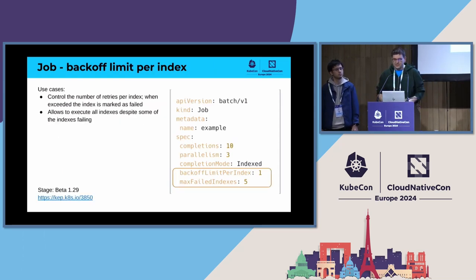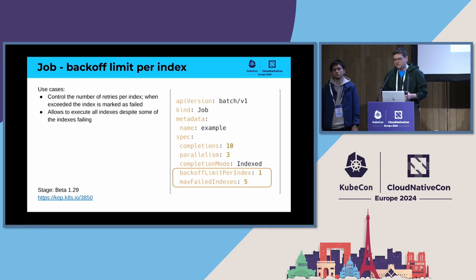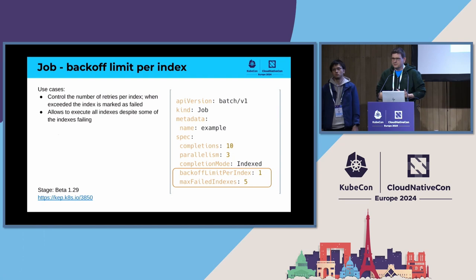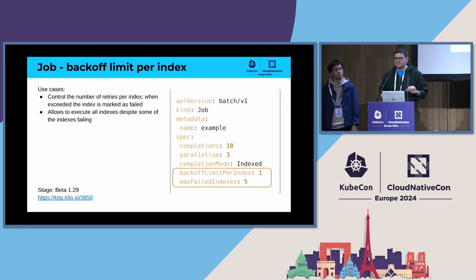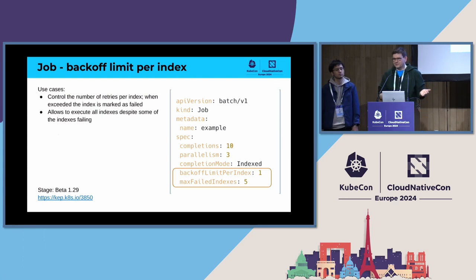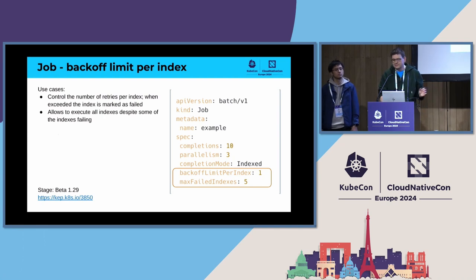The next feature is backoff limit per index. This gives you control over the number of retries not globally like backoff limit, but per index for indexed jobs. This can be useful to ensure all of your indexes run — without it, for example, index zero could consume your entire retry budget. This is useful for situations with fully independent indexes.